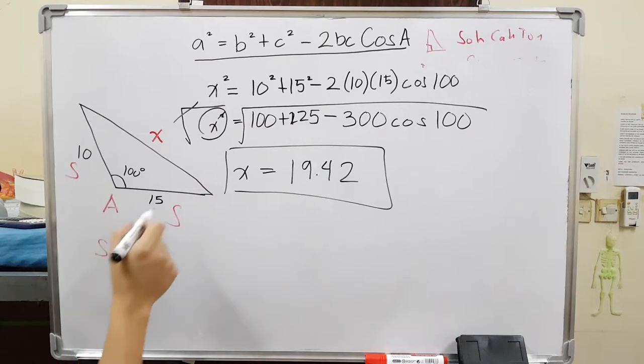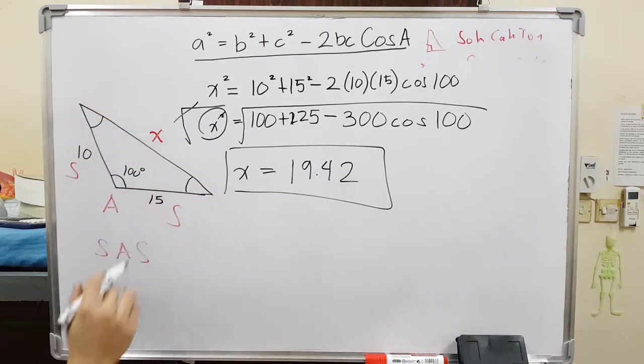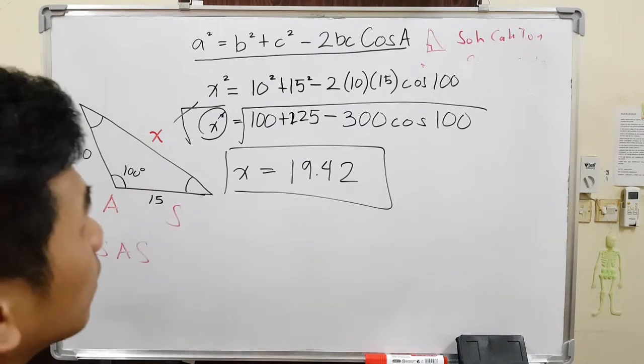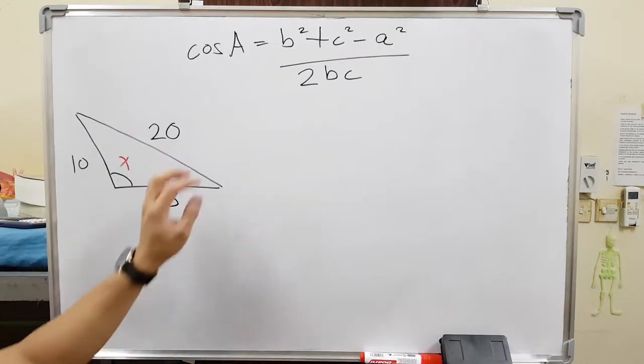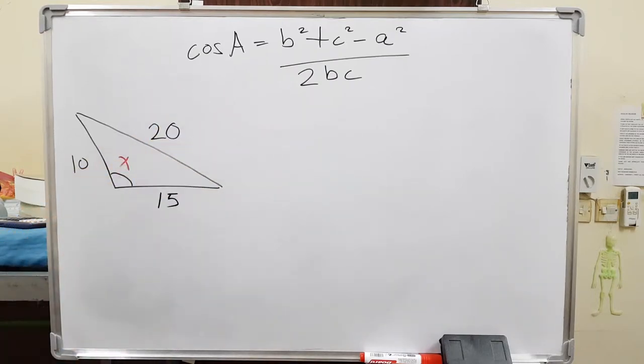And then for example, they want you to find the other angles just in case they want you to find this. And this, you can just apply the sine rule. And I discussed that on my other video. This is how you find an angle using a cosine rule. Now the question is, when do we use a cosine rule when you're looking for an angle?